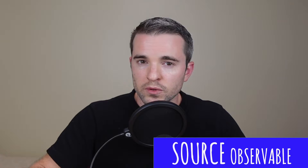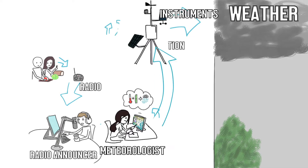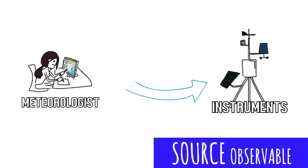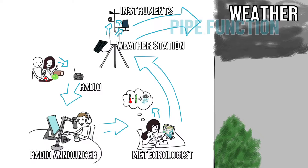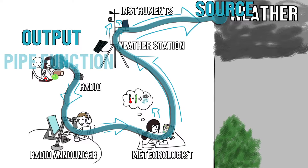There are two ways to describe observables: the source observable and the output observable. Which is the source and which is the output? It depends on your scope. At one scope, the weather is the source and the radio is the output observable. At another scope, the instruments are the source observable and the written report from the meteorologist is the output observable. The reason it matters is because everything in between represents the pipe function — which takes the source observable and performs operations on it to provide an output observable.